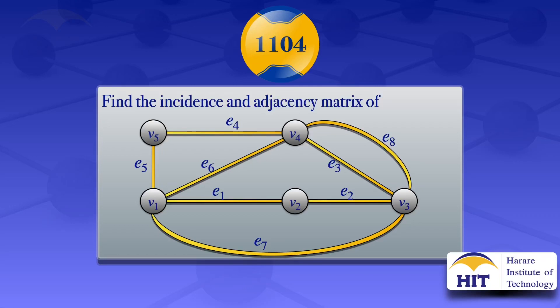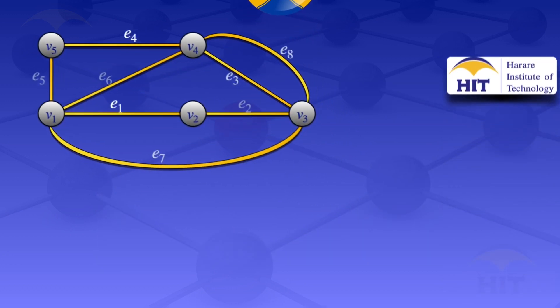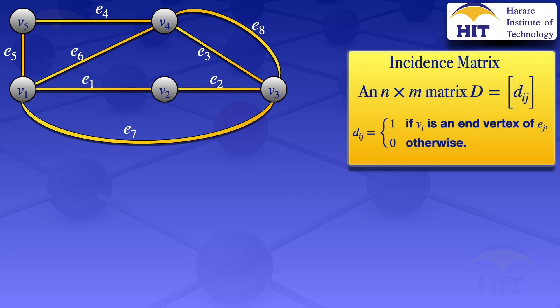In this tutorial I'm going to find the incidence and adjacency matrix of the graph which has five vertices and eight edges, shown on the screen. The incidence matrix is an n by m matrix D with elements d_ij, where d_ij equals one if v_i is an end vertex of edge e_j, and zero otherwise. Since we have five vertices, our matrix will have five rows: v1, v2, v3, v4, v5.